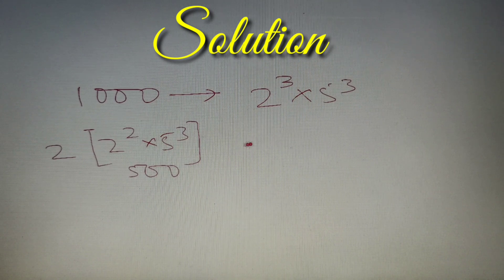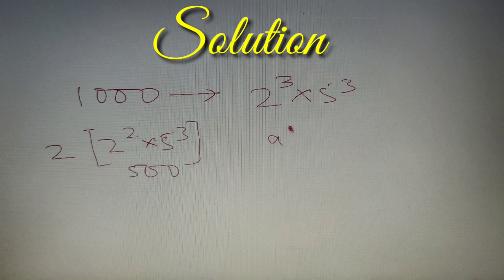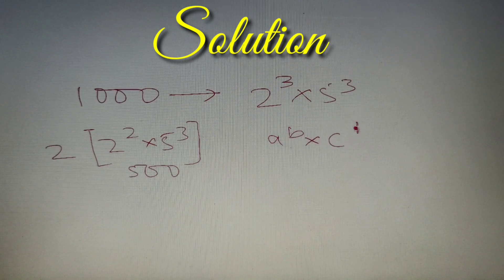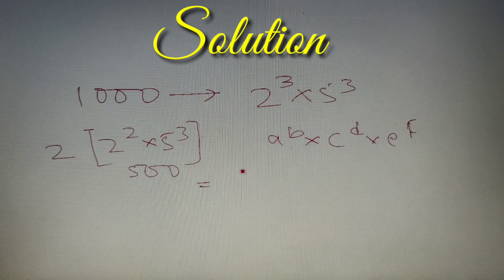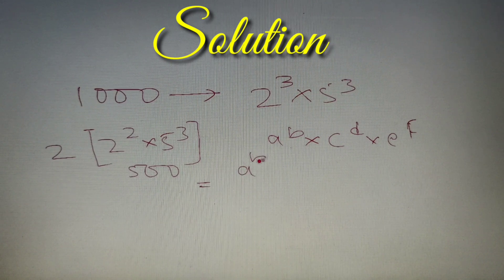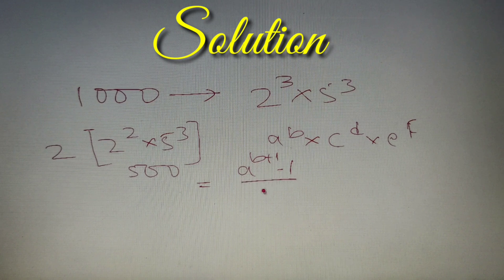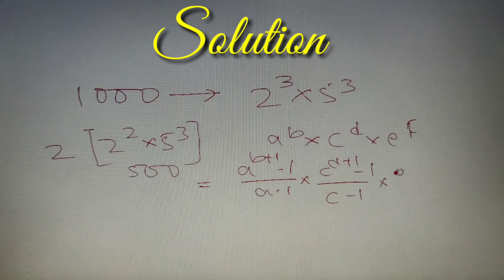Now whenever we have to find the sum of divisors of any number of the form a raised power b into c raised power d into e raised power f and so on, then the sum of divisors of that number is simply equal to a raised power b plus 1 minus 1 whole divided by a minus 1 into c raised power d plus 1 minus 1 whole divided by c minus 1 into e raised power f plus 1 minus 1 whole divided by e minus 1,